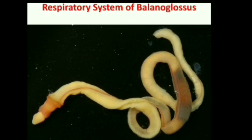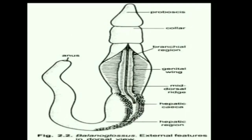Balanoglossus possesses a gill apparatus or gill slits for respiration. This feature resembles chordates — it is a hemichordate, meaning it has features of chordates as well as non-chordates. So the presence of gill slits for respiration is another chordate-like feature. Its respiratory system consists of gill slits which are seen in the branchial region of the trunk.